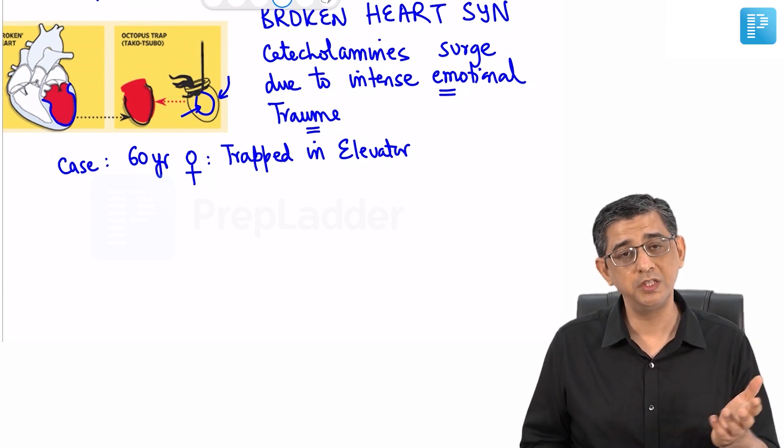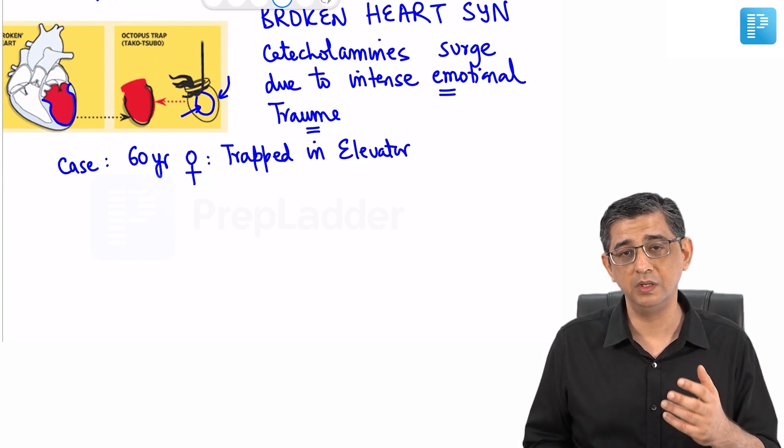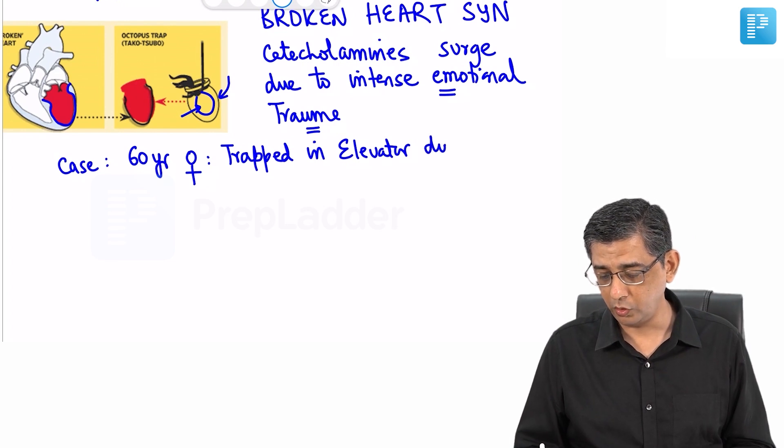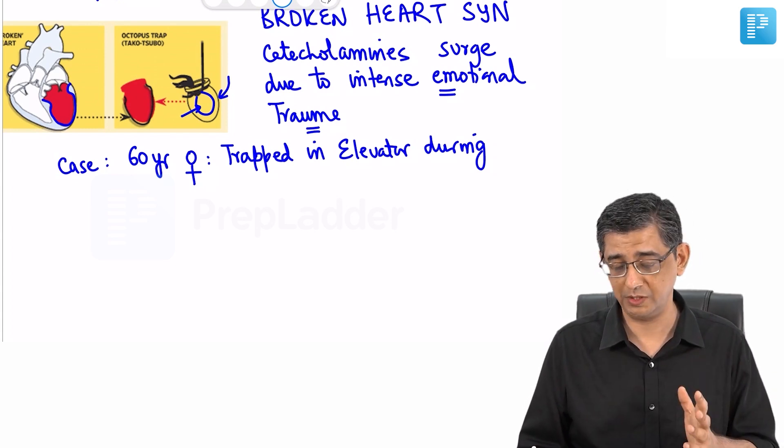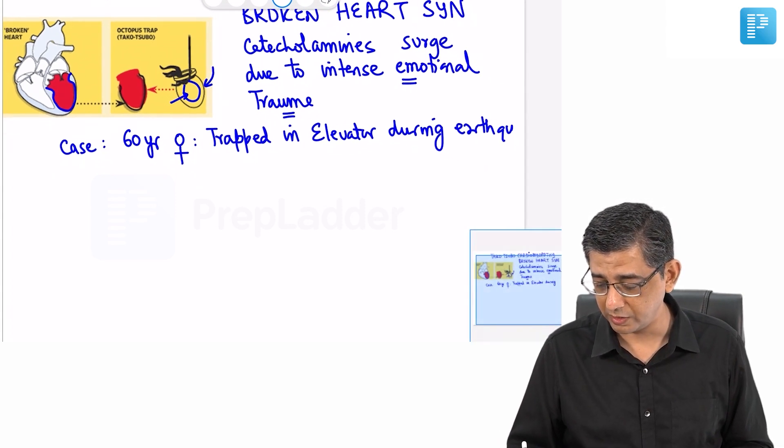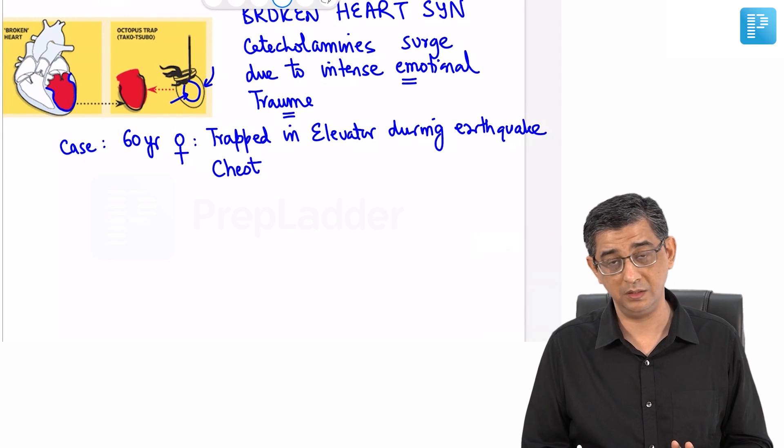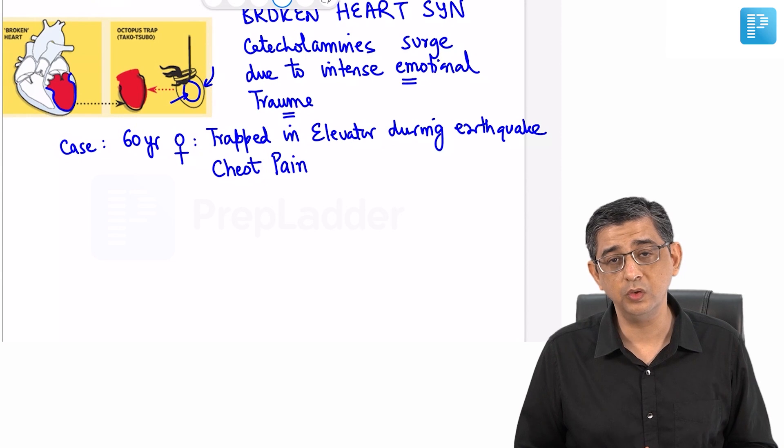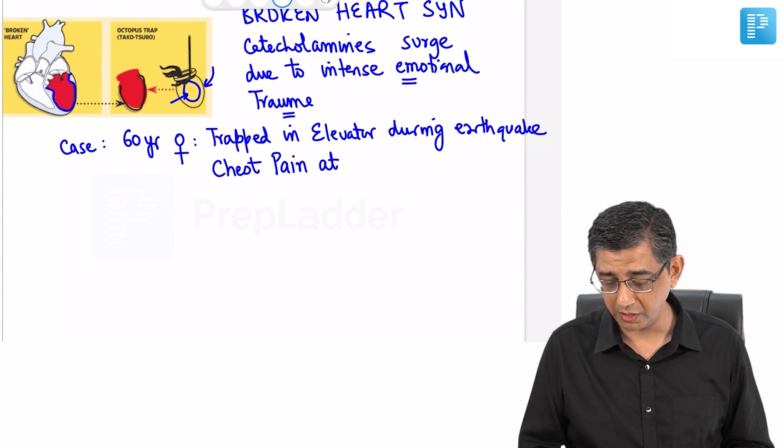Luckily for this lady she was rescued and rushed to the hospital. She was trapped in an elevator during an earthquake on Richter scale 7.0 or even higher. The whole building was literally on the verge of collapsing. Once she was rescued, she's all sweaty, all nervous, her hands are shaking and she's suffering from excruciating chest pain at rest.